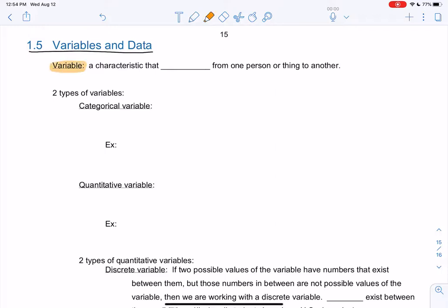So a little bit of vocab. Variable - we've heard this in algebra, same concept in statistics. It's just a characteristic that varies from one person or thing to another. So it won't be numbers all the time like math class, but it could be a number.